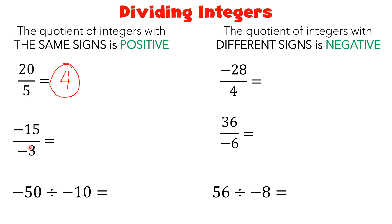Second one: negative 15 over negative 3. So they are both negative, it means your answer must be positive. Whether they are both positive or both negative, but the same sign, your answer must be positive. So 15 divided by 3 is equal to 5, and it will be a positive 5.